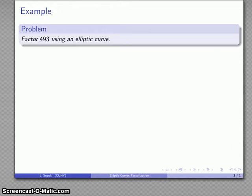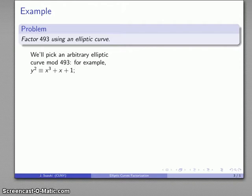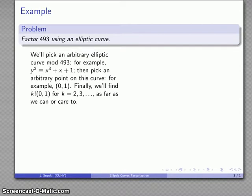So let's take a look at that. How about 493? I'll pick an arbitrary elliptic curve, for example x³ + x + 1, and I'll pick an arbitrary point on the curve. How about (0,1)? That works out nicely. I'll find k!(0,1) for k equals 2, 3, and so on as far as we care to. So 2!(0,1) using my elliptic curve addition formula gives (370,307), and 3!(0,1) gives (316,29).